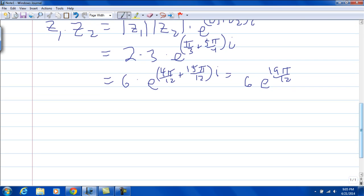So the real part is going to be 6 times cosine of 19 pi over 12. Let's put this in the calculator, make sure I'm in radian mode and I am. 6 times cosine of 19 times pi divided by 12, negative 1.55.